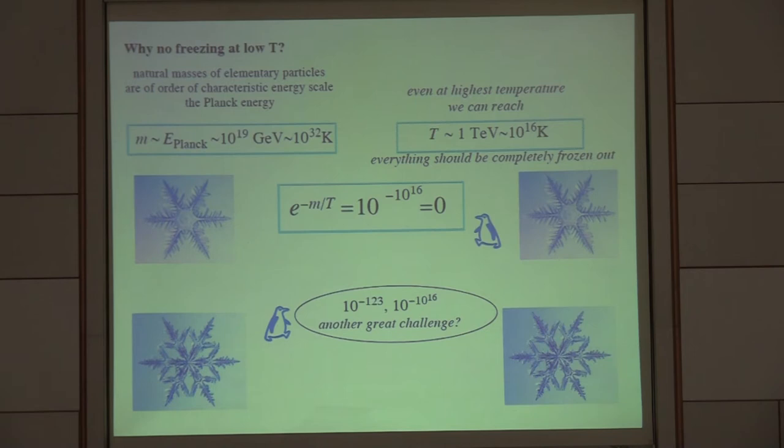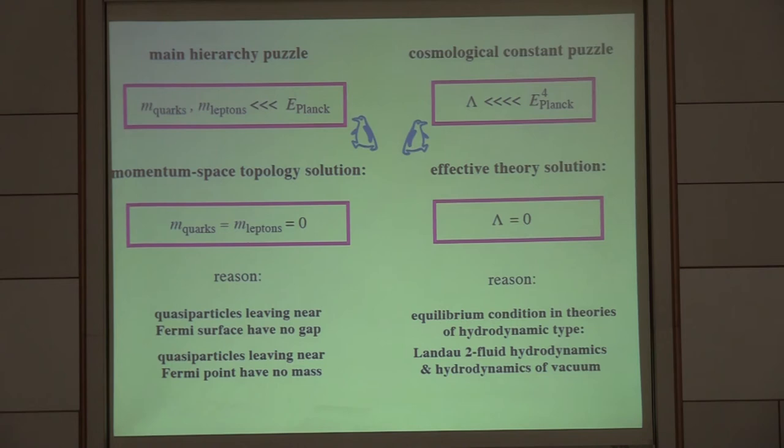There is a characteristic energy scale, the Planck scale. What should be the mass of elementary particles in the medium with such scale? The mass should be mc^2 of order of the Planck scale. It's natural. The Boltzmann law shows that the number of particles in the present universe should be 10^(-10^16). So it is zero in any units. Why are we alive here? Why are we not frozen out completely?